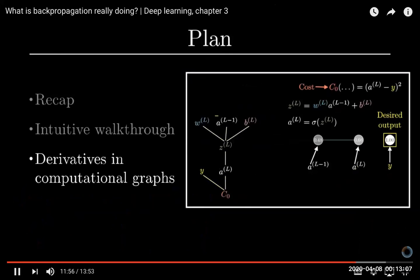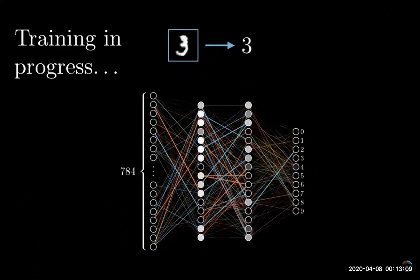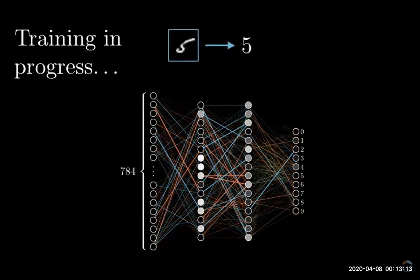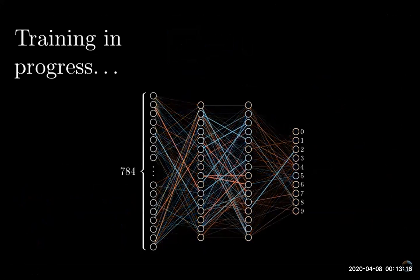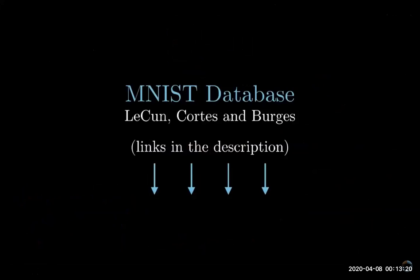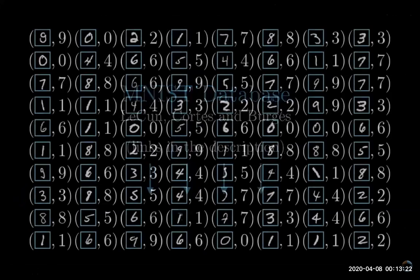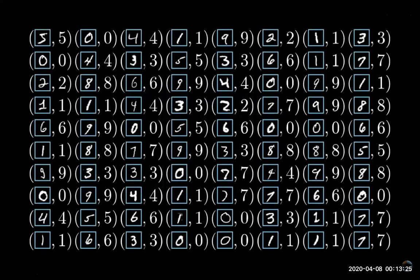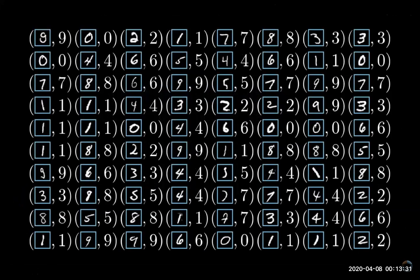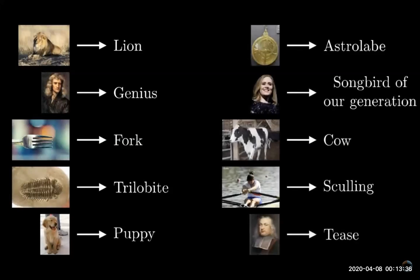For this algorithm to work, and this goes for all sorts of machine learning beyond just neural networks, you need a lot of training data. In our case, one thing that makes handwritten digits such a nice example is that there exists the MNIST database with so many examples that have been labeled by humans. So a common challenge that those of you working in machine learning will be familiar with is just getting the labeled training data that you actually need.